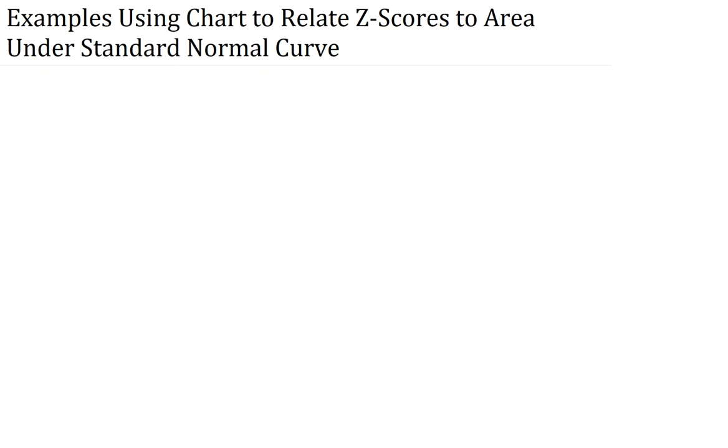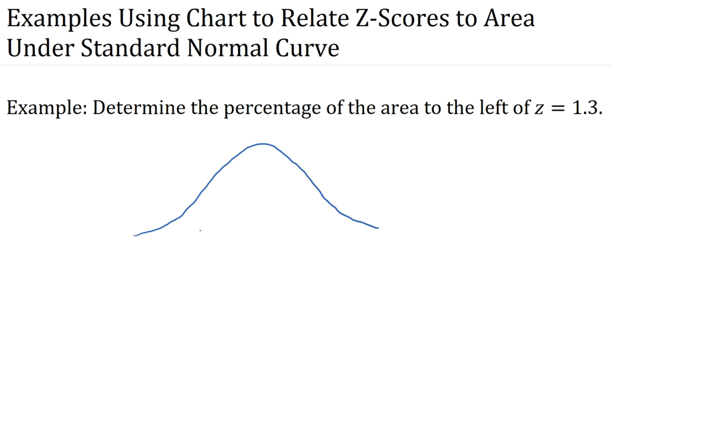Here's an example. I want to determine the percentage of the area to the left of z equals 1.3. So I draw pictures of every single one of these problems so that I make sure I'm not making bad assumptions. So here's my standard normal curve. Of course, z equals 0 is right in the middle, and then z equals 1.3 is over here to the right somewhere.